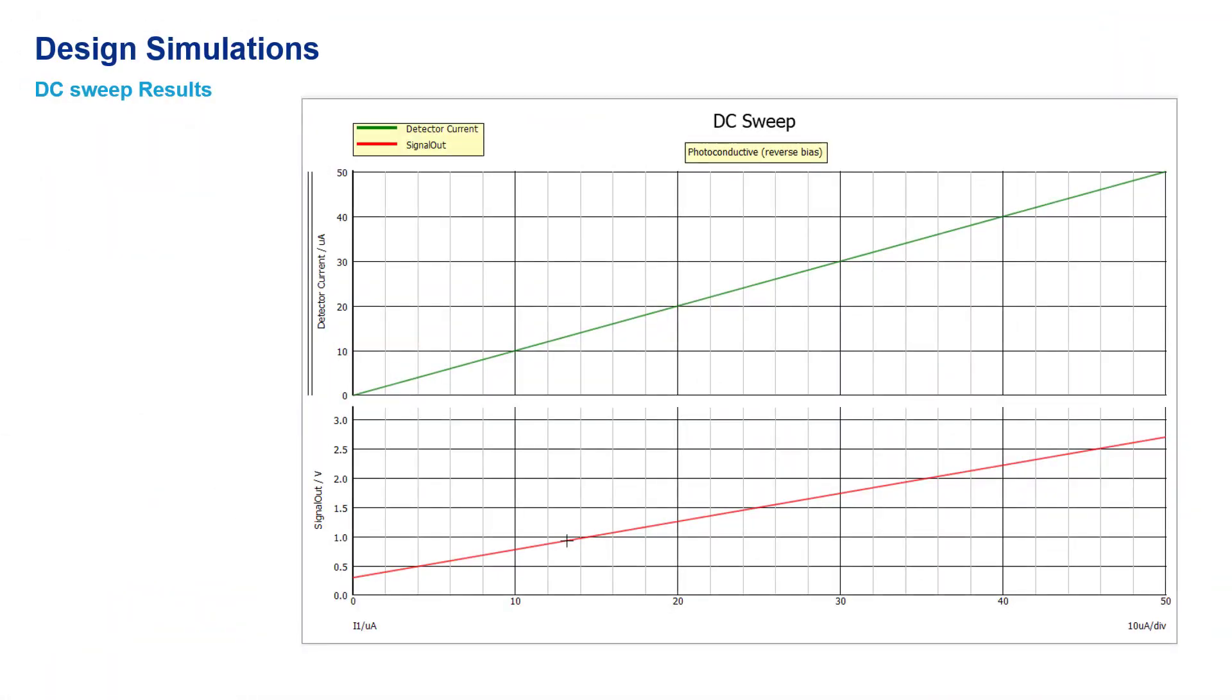To verify the functionality of the circuit, we run a DC sweep analysis. When the input current is at zero, the simulated output voltage is 300 millivolts. When the input current is at 50 microamps, the simulated output voltage is 2.7 volts. This confirms that our simulation matches the design.